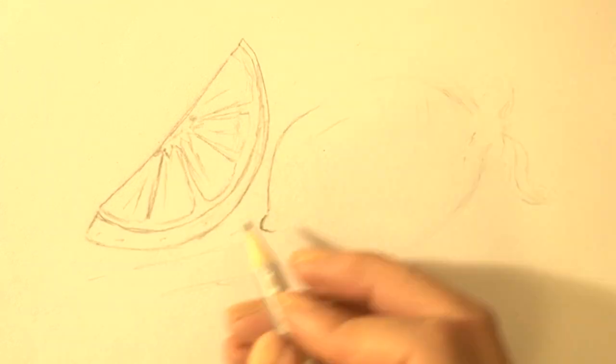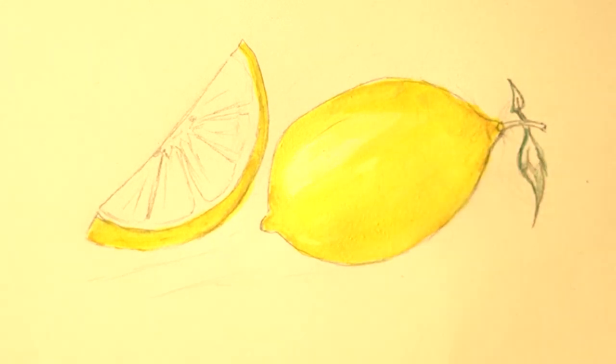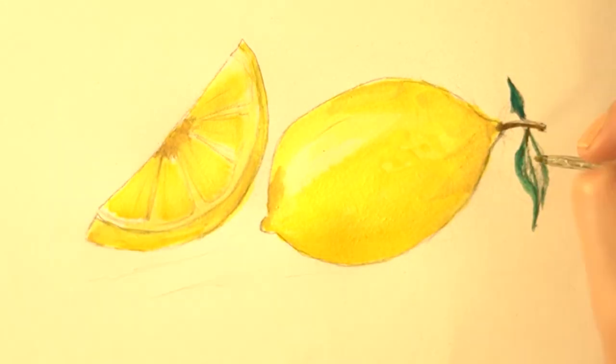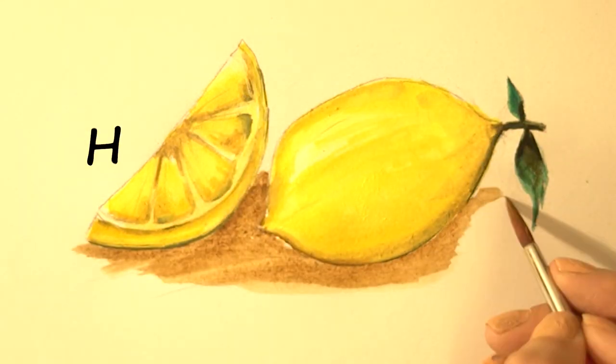Hello and welcome to how to draw stuff. Drawing fruit is one of the oldest traditions in art, but there are many ways to do it. Here we not only show you how to draw a whole lemon and a lemon slice, but also how to use watercolors to make it look practically edible.